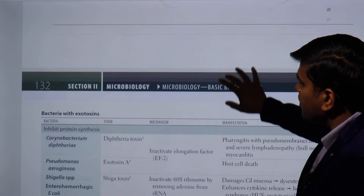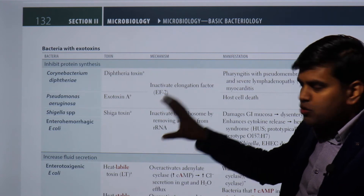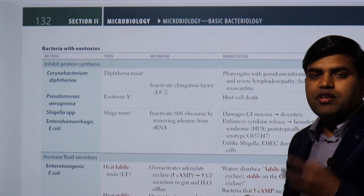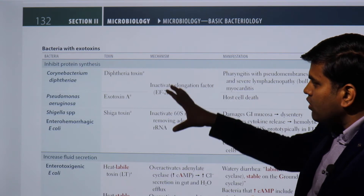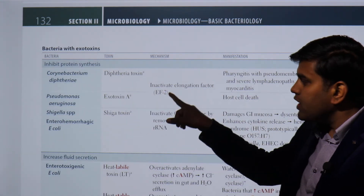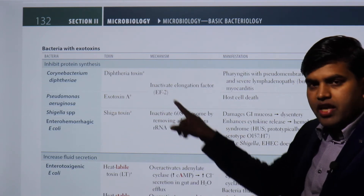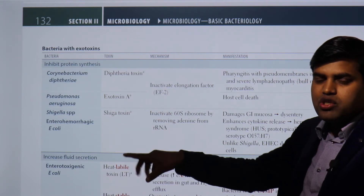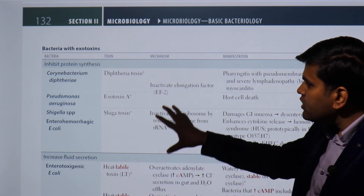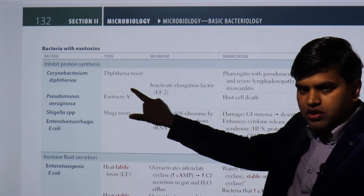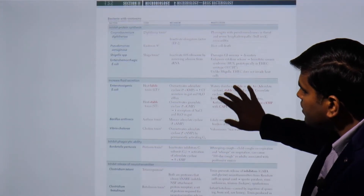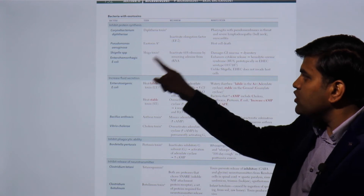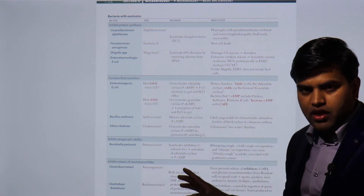Different bacteria release exotoxins with different mechanisms and different effects on the body. For example: Corynebacterium diphtheriae releases diphtheria toxin; Pseudomonas aeruginosa releases exotoxin A; Shigella produces Shiga toxin; and enterohemorrhagic E. coli produces a Shiga-like toxin. These toxins share a similar mechanism of action — inhibiting protein synthesis.